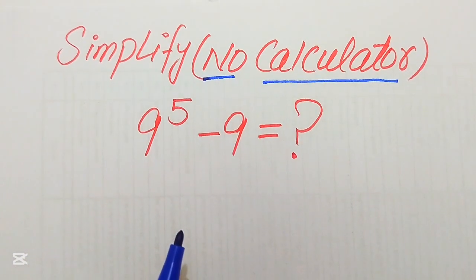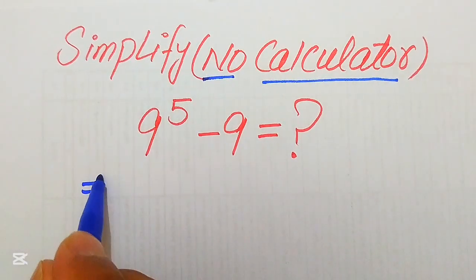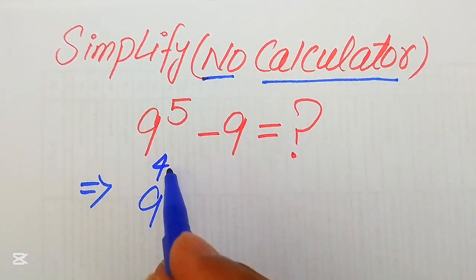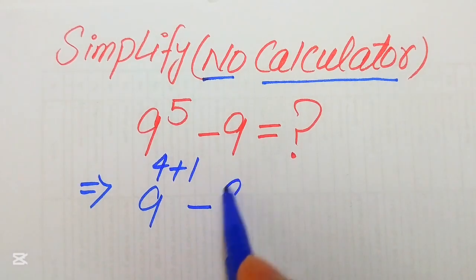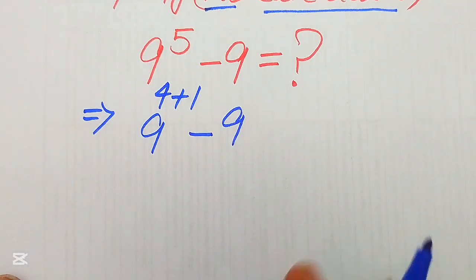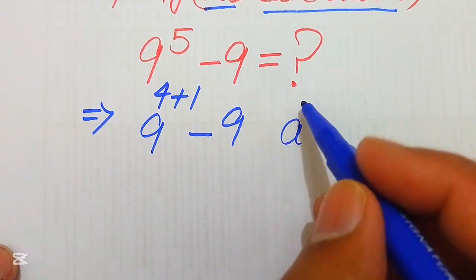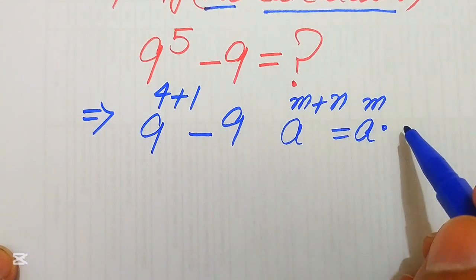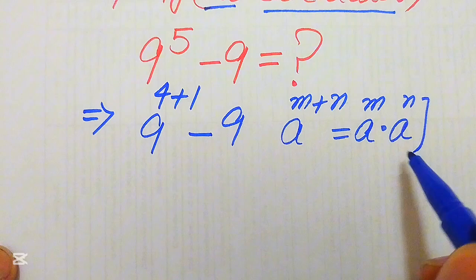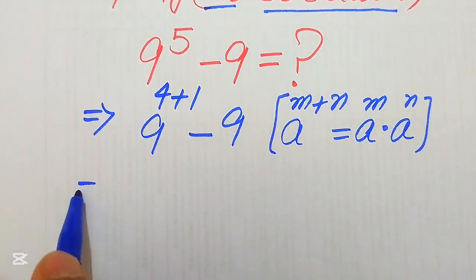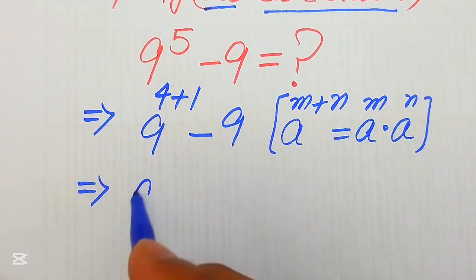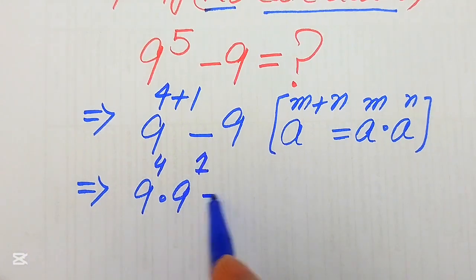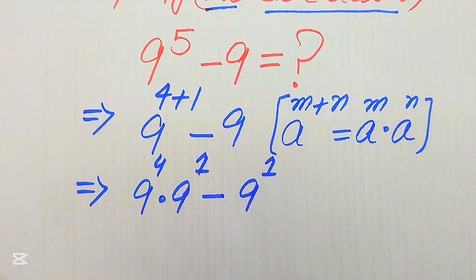The very first step is to focus on the exponent of this term. The exponent is 5, so we break this 5 as 4 plus 1, minus 9. Then we apply the exponent law: a to the power of m plus n equals a to the power of m multiplied by a to the power of n. So we break the exponent and write 9 to the power of 4 multiplied by 9 to the power of 1, minus 9 to the power of 1.